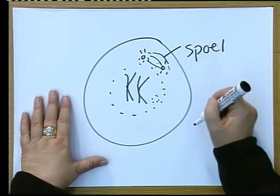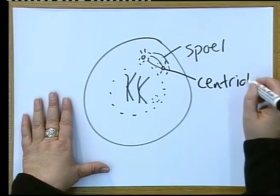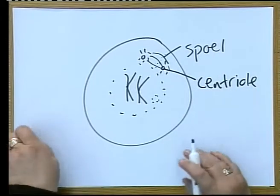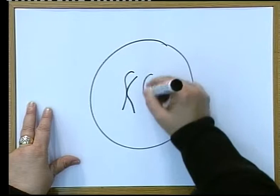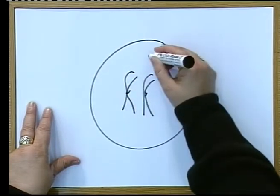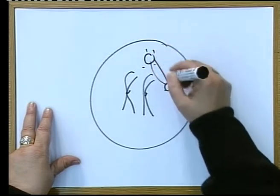This is a centriole, a centriole. And when you get a sketch where the chromosomes are already visible, and you've got your centriole there, for instance, where the spindle is forming.